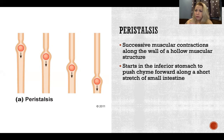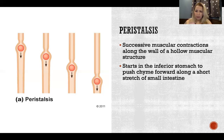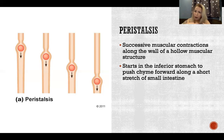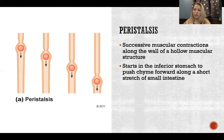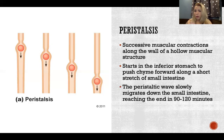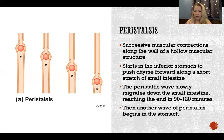Peristalsis in the small intestine starts at the distal stomach, right before the contents move from the stomach into the small intestine. That peristalsis moves like a wave through the entire small intestine all the way to the large intestine. It takes about 90 to 120 minutes for that wave to pass through the whole small intestine, and then another wave starts all over again, starting at the stomach.